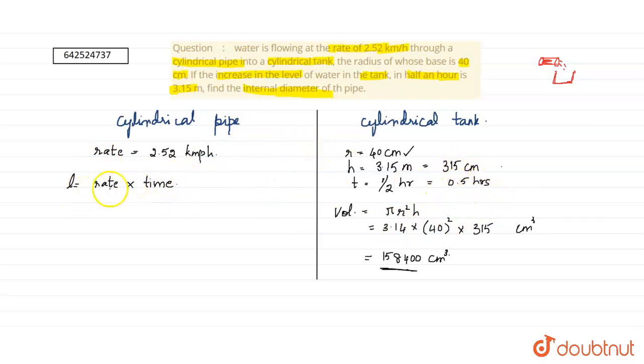Length equals rate times time, which is 2.52 × 0.5 = 1.26 kilometers. Converting to centimeters, we get 126,000 centimeters.